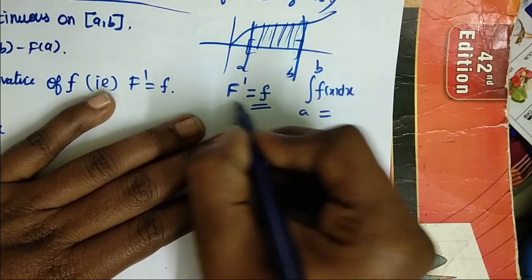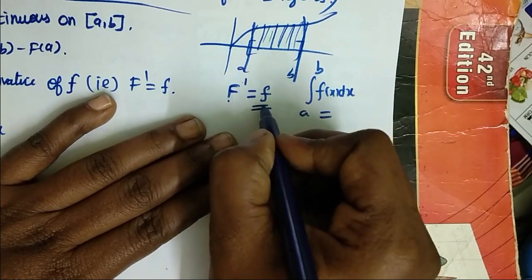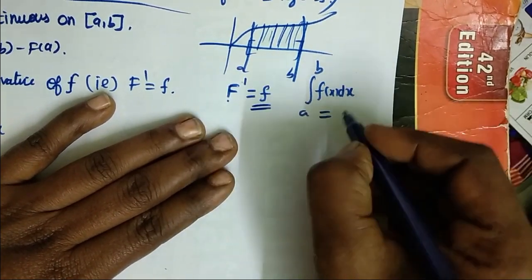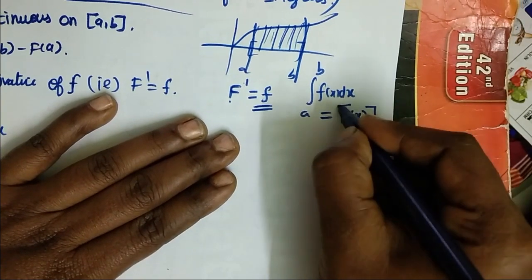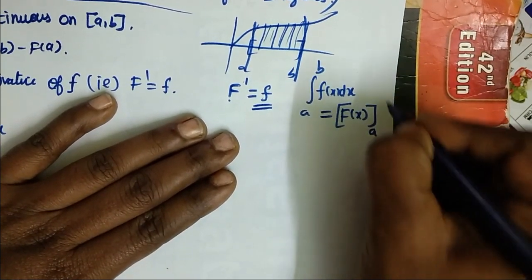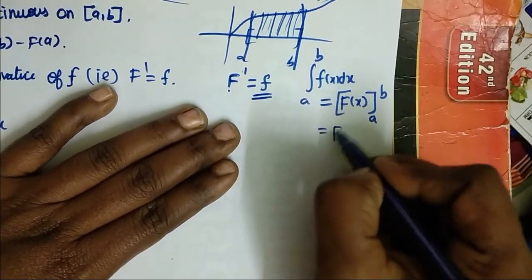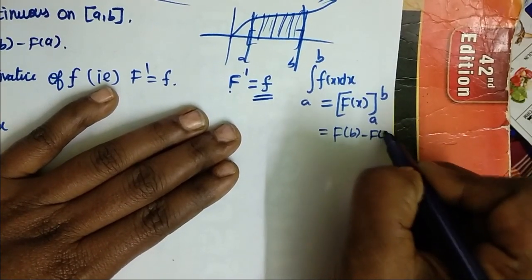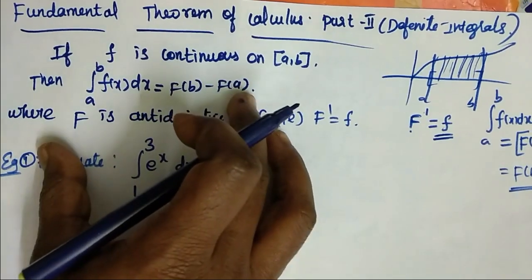Integrate the function — if we find a function and differentiate the function, what is F? This function is the answer. This function evaluated from a to b, over the interval — it means the upper limit minus the lower limit. The answer is the Fundamental Theorem of Calculus.